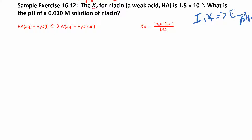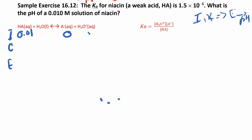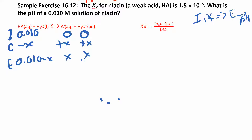Let's set up our ICE table. Initially we have 0.01. We don't have any of the products initially. So we have minus X, plus X, plus X for the change row. These ICE tables all look pretty much the same. So those are our Xs.